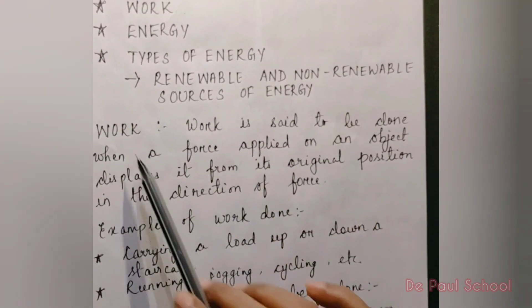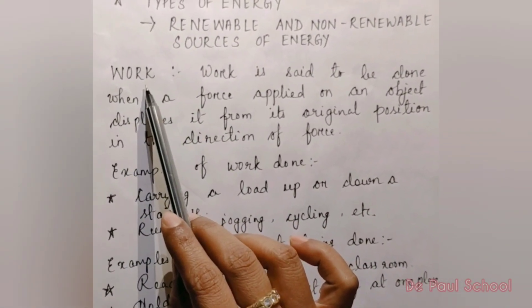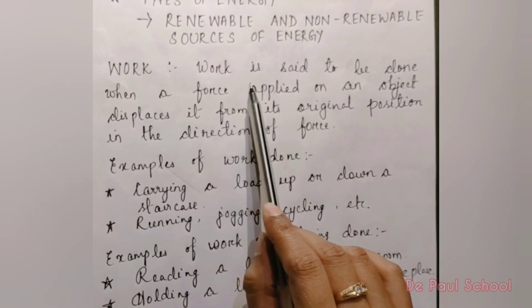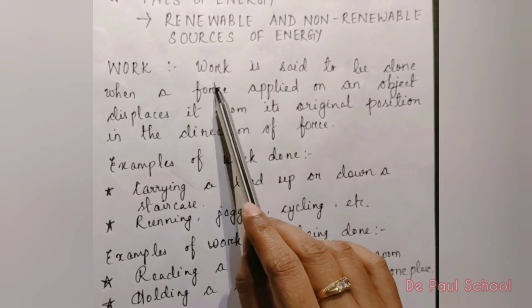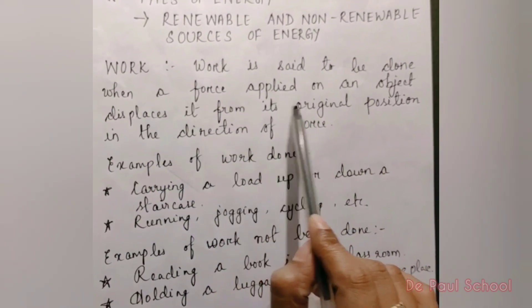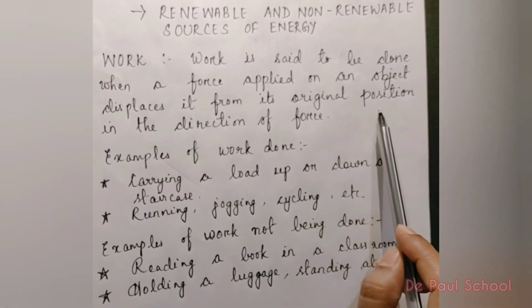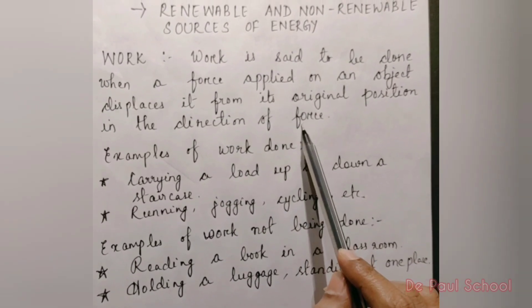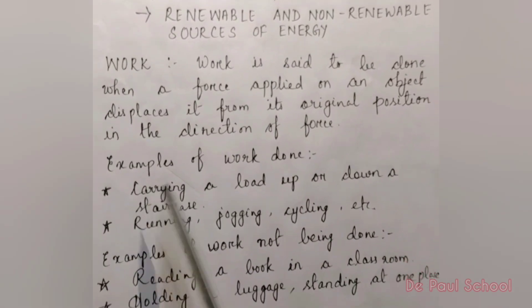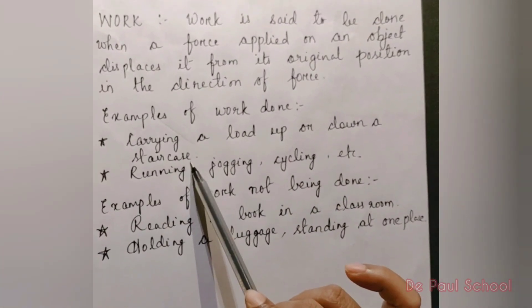Let us go one by one. First, we have work. What does work exactly mean in science? The definition is: work is said to be done when a force applied on an object displaces it from its original position in the direction of force. Examples of work done include carrying a load up or down a staircase, running, jogging, cycling, etc.